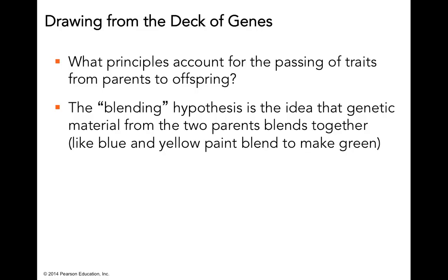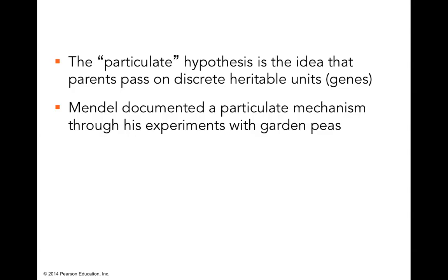One idea that was pervasive for a while was that we look like our parents because characteristics of our parents are blended together — we're a little bit mom and a little bit dad — kind of like paint blended to make new colors. But a contradictory opinion states that characteristics are not continuous and can't be blended like paint; rather, there are particles. We now think this is the correct, accepted model, and these particles that are passed on are our genes.